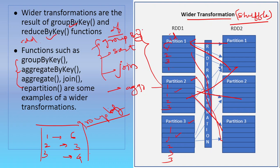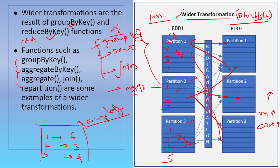That is called wider transformation. If you use join as well, imagine you have two data frames — one sitting here and another here. If you're joining based on a condition, rows matching from both data frames need to be pulled out, so all records shuffle, and the transformation takes more time. More time means your virtual machines or clusters run longer, which increases cost. You can avoid wide transformation when possible — if you can do the work in narrow transformation, do that. If not, use wide transformation, but it is costlier than narrow transformation.